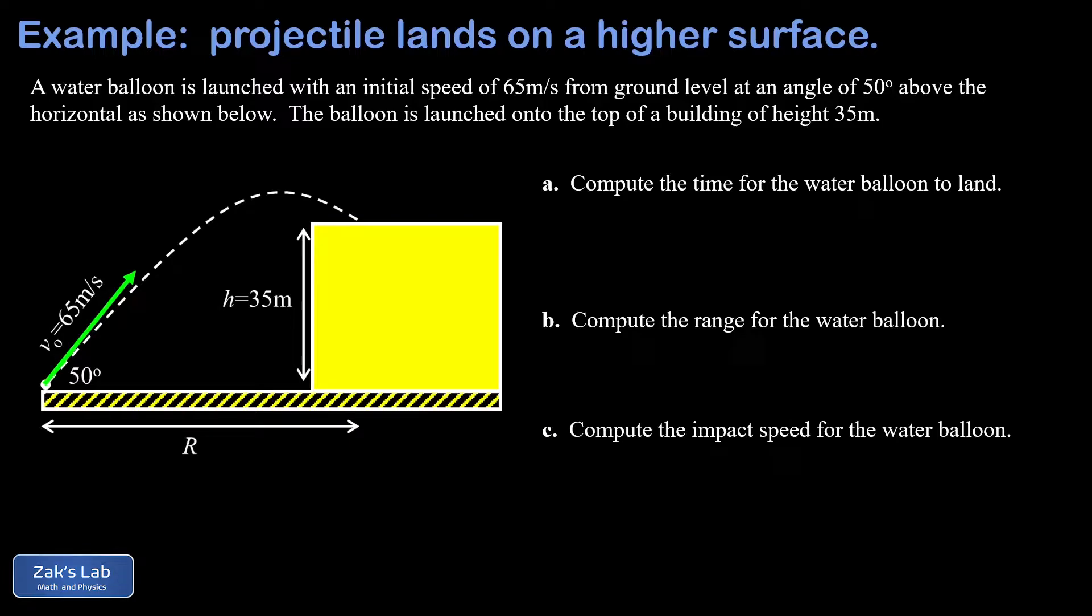we begin by breaking the initial velocity into its components. The x component is given by v naught cosine of the angle. In other words, 65 cosine of 50 degrees, which gives me about 41.8 meters per second. The y component is given by 65 sine of 50 degrees, which gives about 49.8 meters per second.